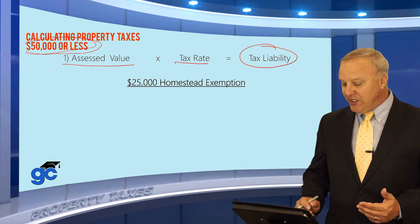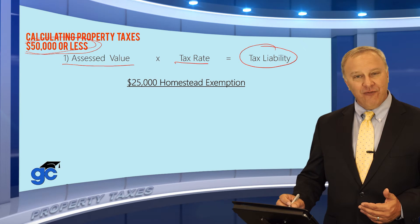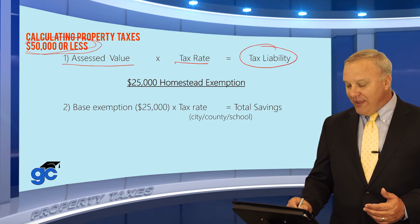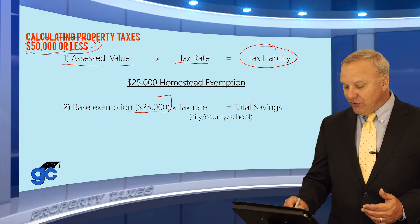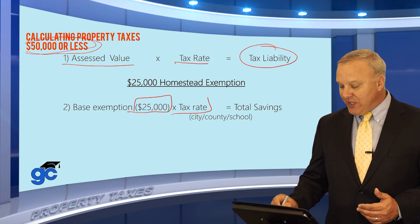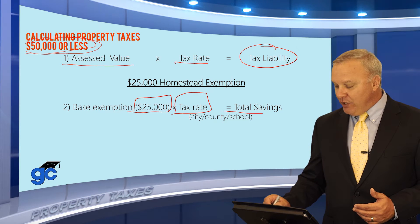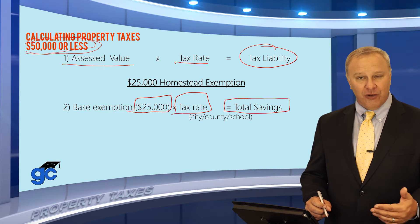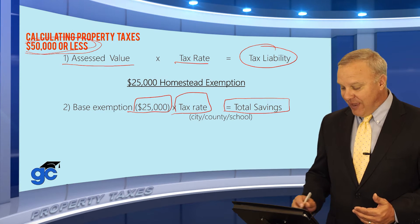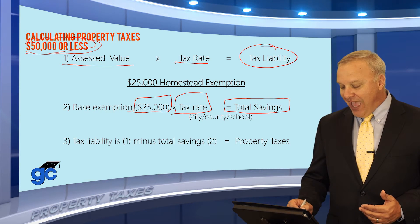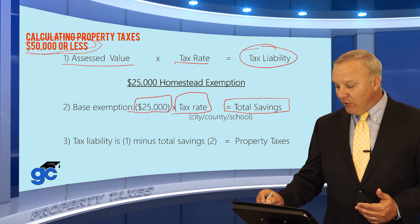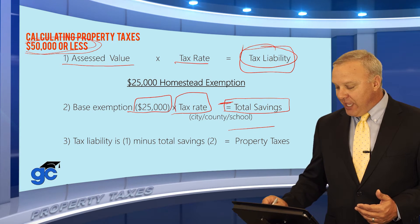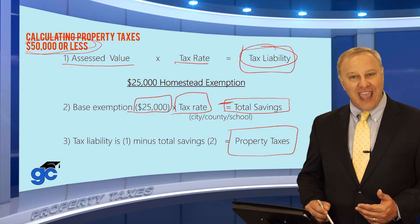But this property is a homestead and qualifies for the $25,000 basic homestead tax exemption. So what we would do is take $25,000, which is your exemption amount, times the tax rate. That would give you the total tax savings attributable to the homestead tax exemption. The tax liability is going to be your total tax liability minus your savings from the exemption, and that will be the amount of the property taxes due.